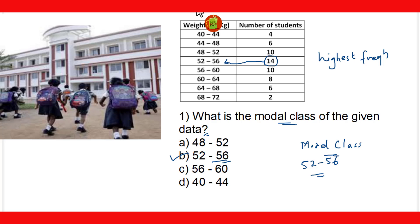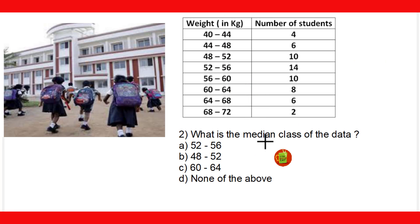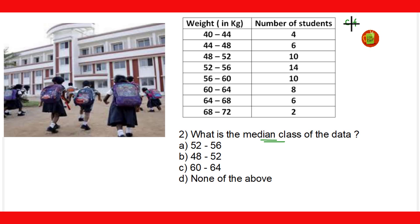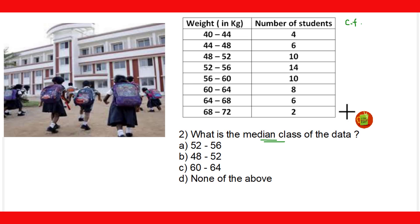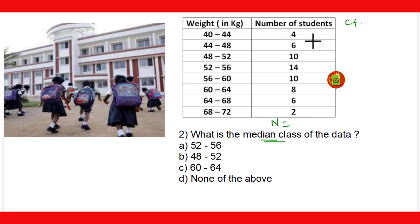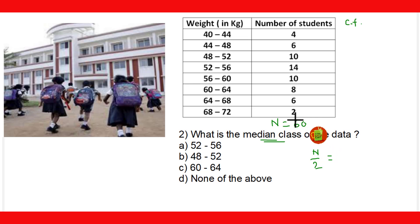The second question asks: what is the median class of the given data? To find the median class, we write the cumulative frequency. However, since only the median class is asked, there is no need to find all cumulative frequencies. We take the total of the frequency, denoted by n. The total frequency is 60, and then we take n/2, which is half of the total frequency — that is 30.